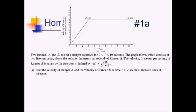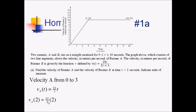So we write V sub A equals ten-thirds times t for zero to three, being careful to distinguish this from runner B's v. Plugging in two gives ten-thirds times two, which is twenty-thirds meters per second. You only need to add the units, but that's the extra step taken here.